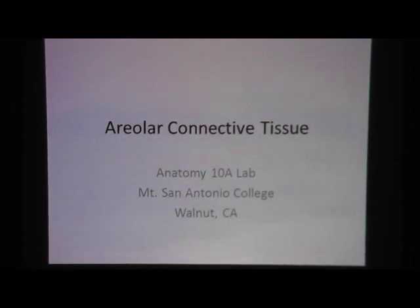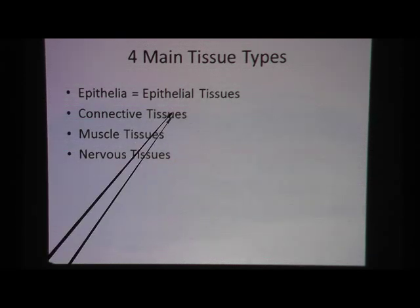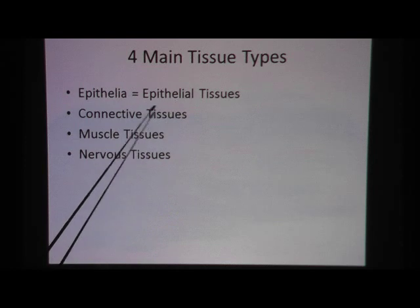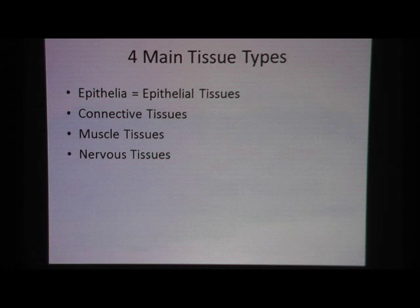This is made for an AMI 10-day lab at Mount San Antonio College. Let's review the four main tissue types: epithelial tissues, connective tissue, muscle tissue, and nervous tissue. The entire body can be broken down into one of these four tissue types.